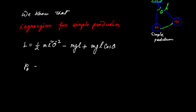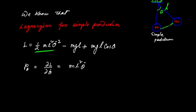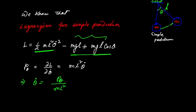We know that the generalized momentum p_θ is equal to ∂L/∂θ̇. If you find this, you will get ml²θ̇, because this is the only part that is a function of θ̇ and the derivative of the remaining parts with respect to θ̇ will be zero. This implies θ̇ = p_θ / ml².